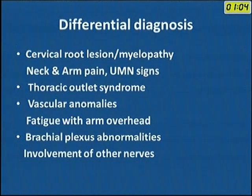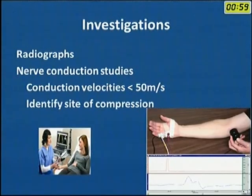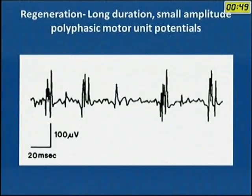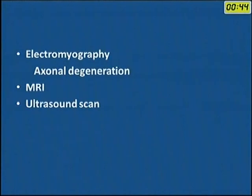Differential diagnosis includes cervical root lesion, thoracic outlet syndrome, vascular lesions, and brachial plexus anomalies. Investigations include nerve conduction velocity — the normal conduction velocity is 50 meters per second — as well as fibrillation potentials assessing various regeneration changes. EMG is also very useful.